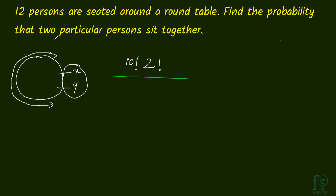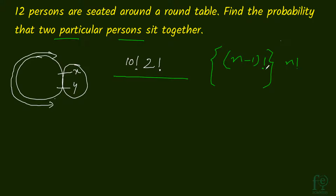Now, what is the total number of ways in which these persons can be seated around a round table? It will be equal to n minus 1 factorial. As covered in the permutations and combinations playlist, the number of ways to arrange n persons around a round table is n minus 1 factorial. Here, with 12 persons, it will be 11 factorial.